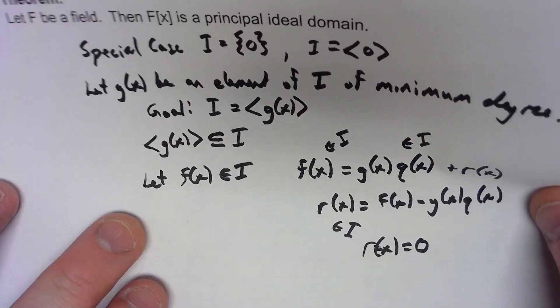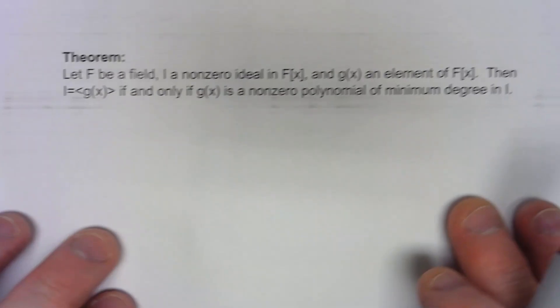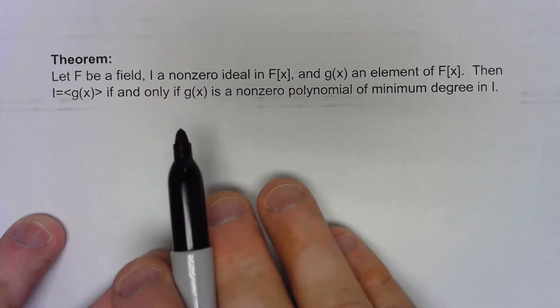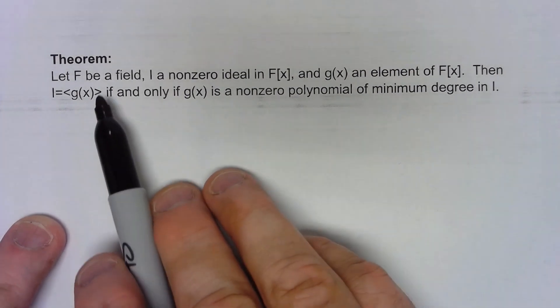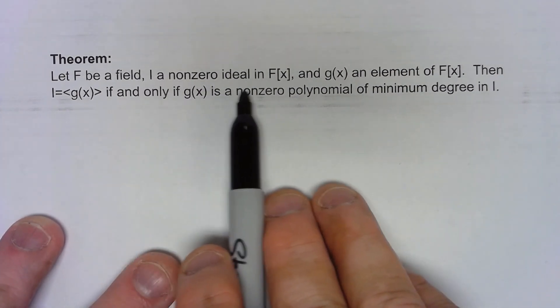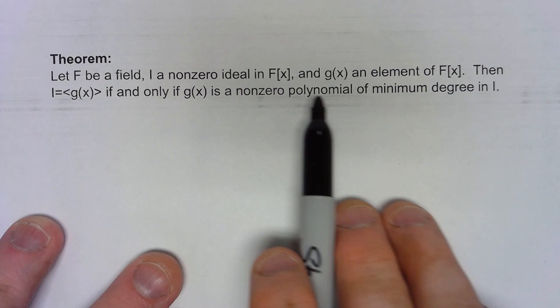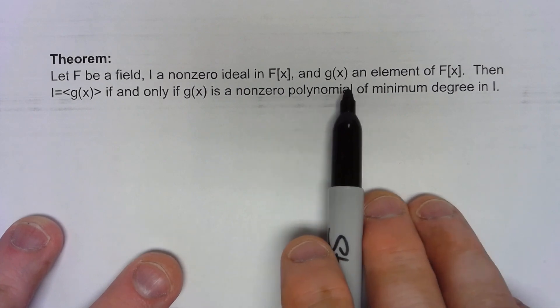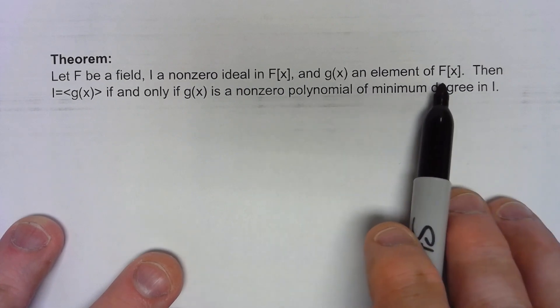Now, just thinking about the proof we just did here, we've actually kind of proven something else. If it's a field and we've got a nonzero ideal, then g(x) is an element of that...